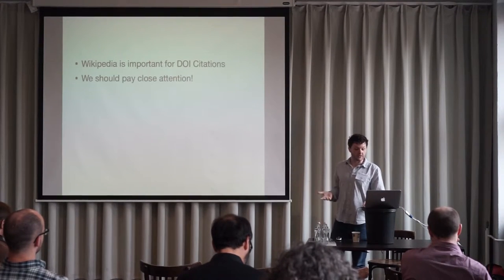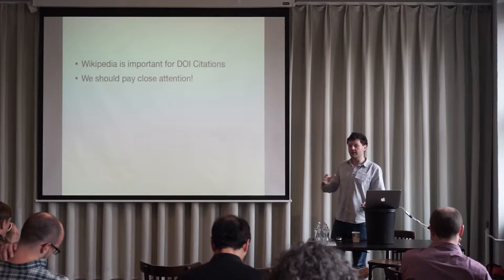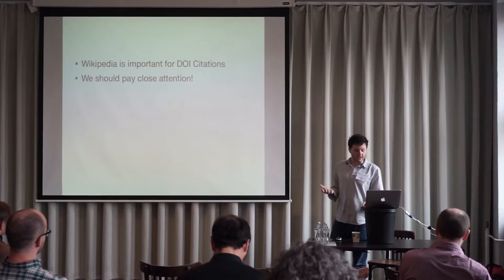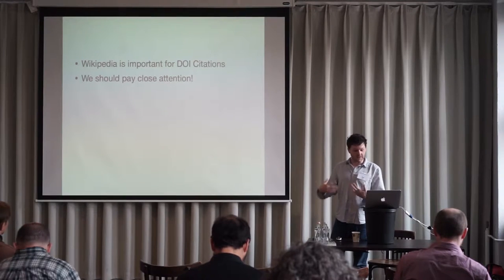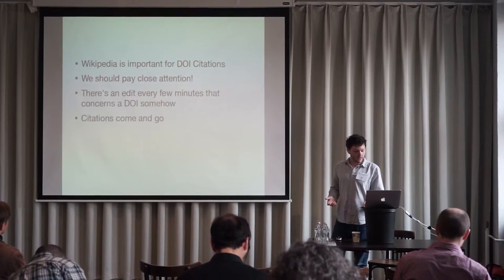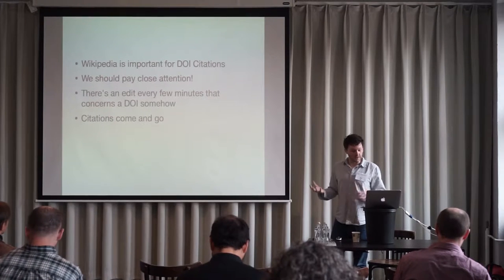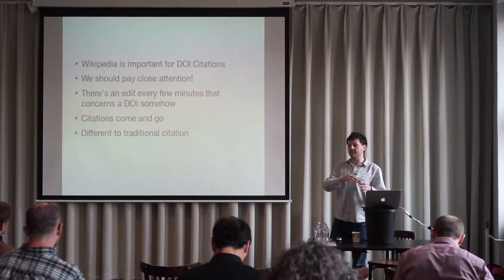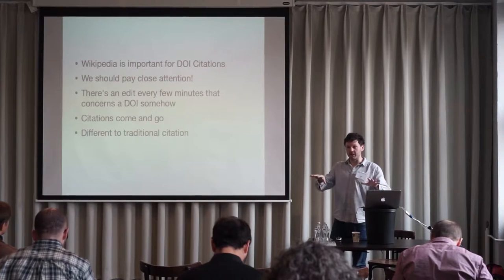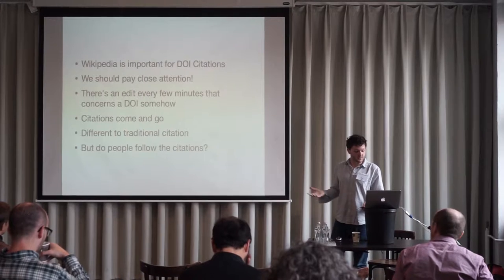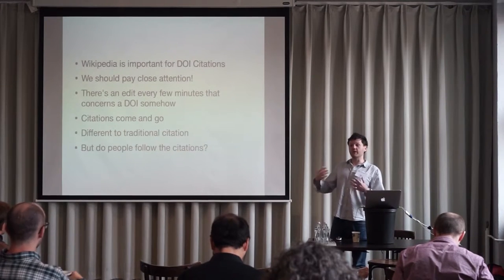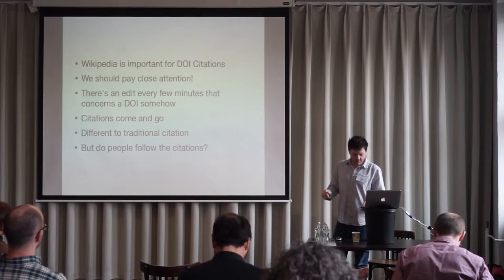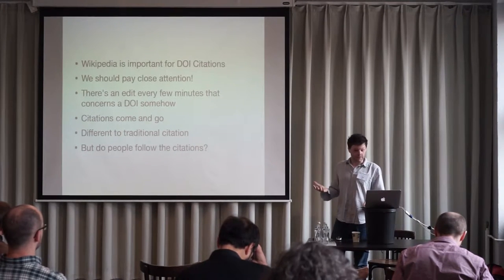From this experiment we knew that Wikipedia is important for DOI citations, and we need to pay really close attention to what's happening there, because this is a brand new way things are happening — it might be 15 years old but we're just getting into it now. We know that citations come and go, unlike in traditional scholarly publishing. Traditionally a citation existed and would never change; now an article can have references added and removed. So we know DOIs are being used in Wikipedia — but do people actually click on them?